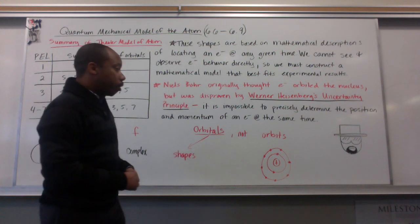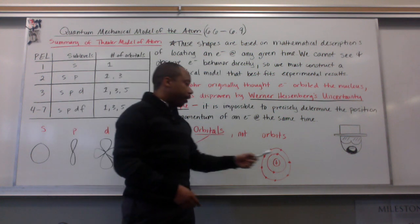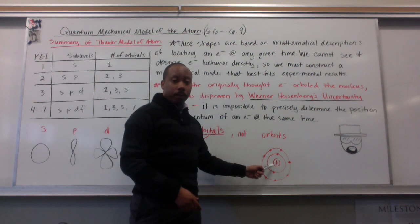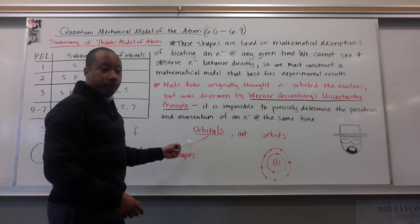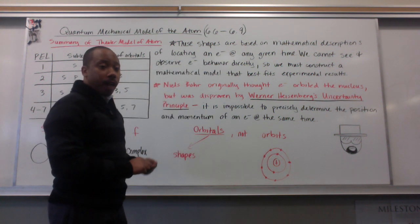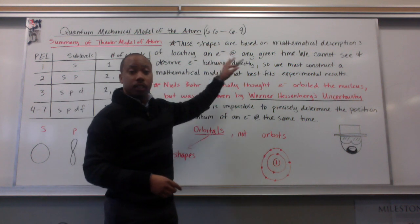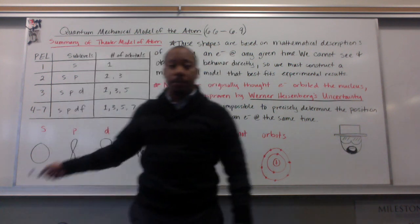This is why we can no longer say that electrons are in orbit because orbits are predictable. We have to say that they're in orbitals because we can only confine them to a certain mathematically described space, which are these shapes here.